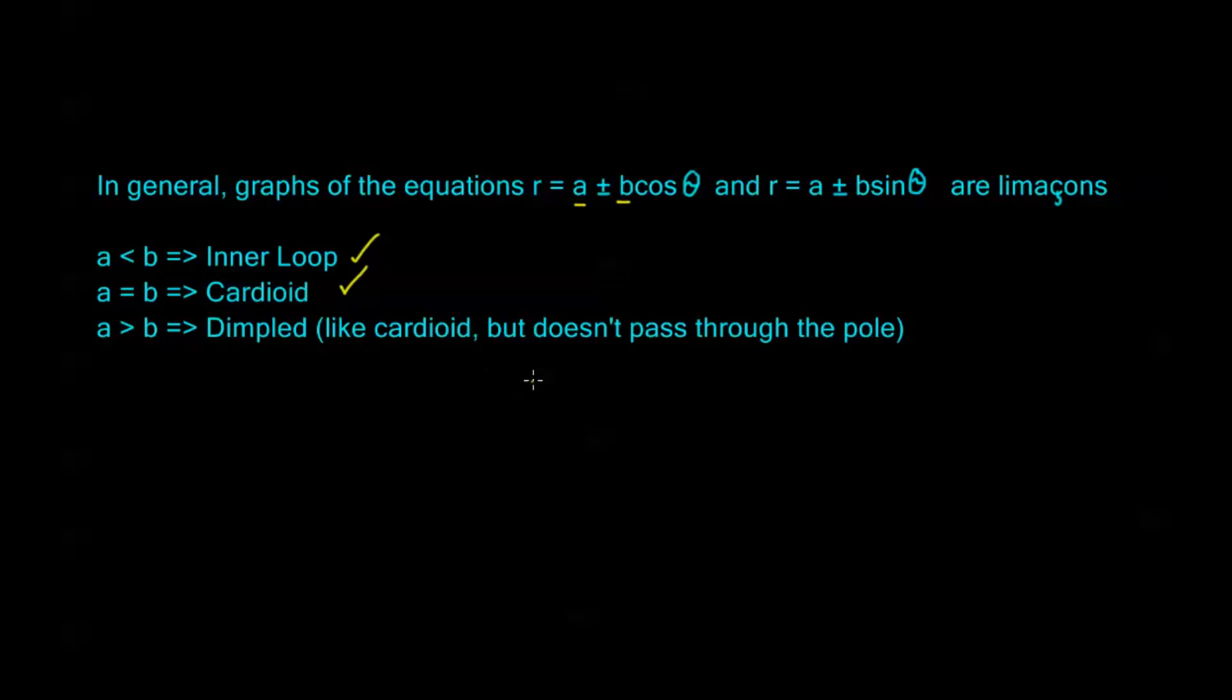All right, so that's our limouson. Now in the next video we're going to talk about our last type of polar graph. It's called the lemniscate. We'll see you there.